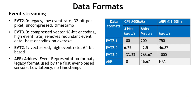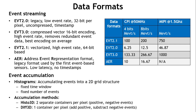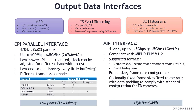There are different event streaming formats — compressed or uncompressed vectorized formats — optimized for bits-per-event count, plus accumulated event formats. The user can choose between two interfaces: a parallel interface providing very low latency, very low power connectivity suited to neuromorphic compute platforms, or a MIPI interface offering high bandwidth and high performance for mobile application processors and similar platforms.